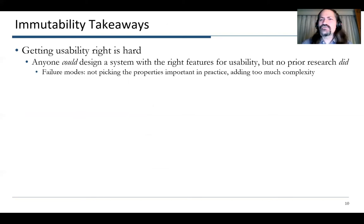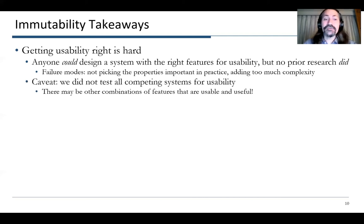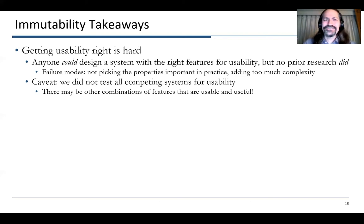Some takeaways: getting usability right is hard. Anyone could have designed a system with the right features for usability, but no prior research did — or at least demonstrated that they did. The failure modes are not picking the properties that are important in practice, and adding too much complexity, which might be good for research exploration but not for a usable system. A caveat: we didn't test all the competing systems for usability, so there may be other combinations of features that are usable and useful besides the ones we found.